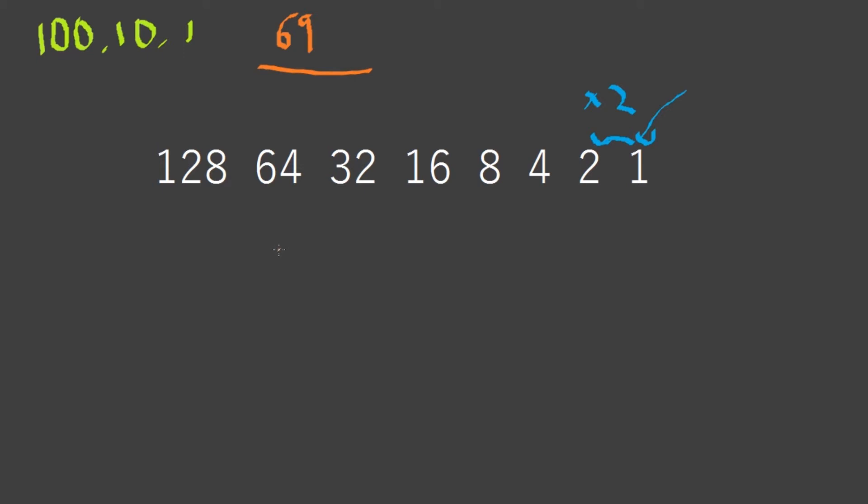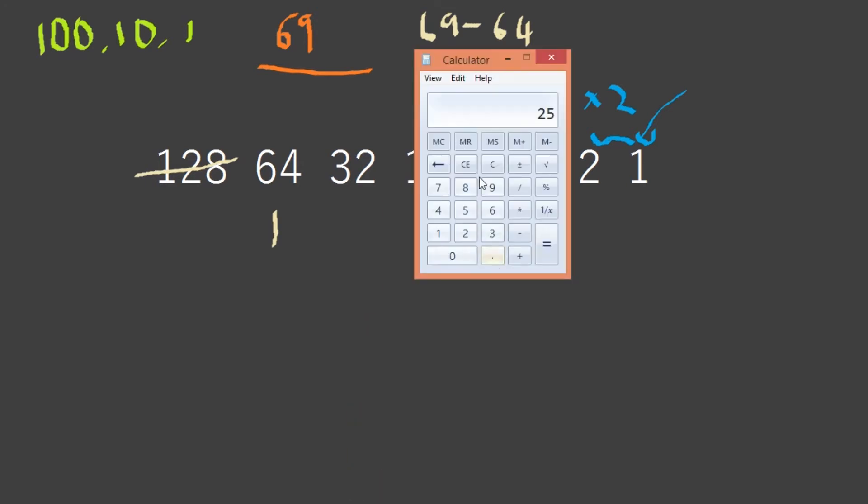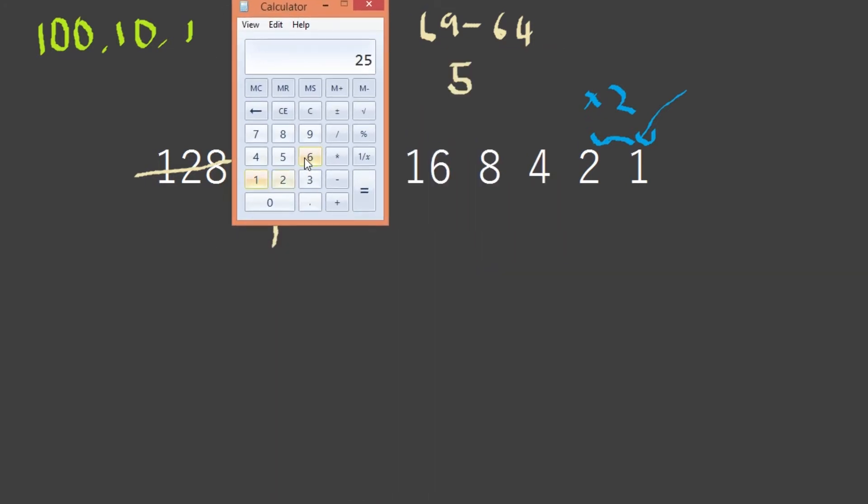Let's see if we can convert this into zeros and ones. Can 128 go into 69? It cannot. Can 64 go into 69? Yes, so we add a 1. Now what is 69 minus 64? That is 5. Let me check: 69 minus 64 is equal to 5, yes.